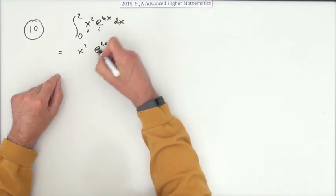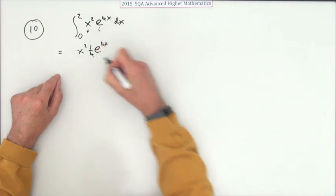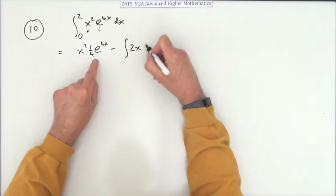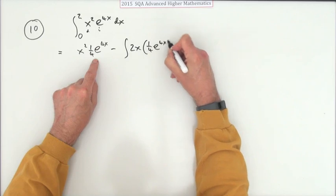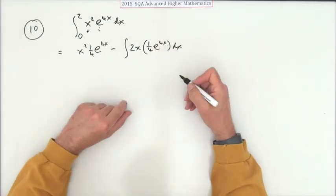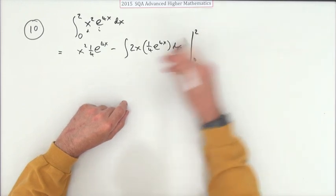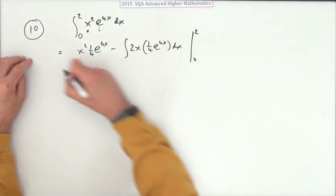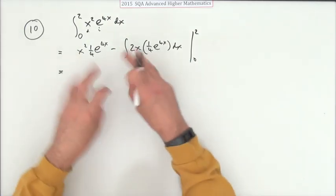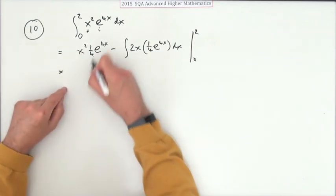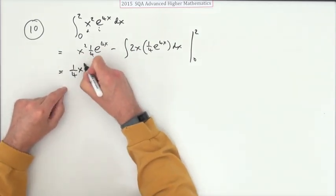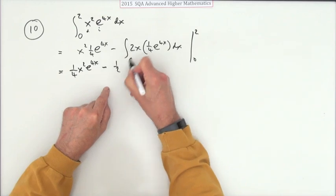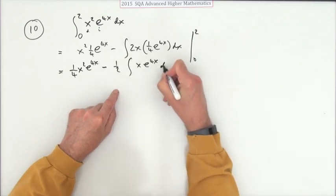Integrating first: e^(4x) integrates to a quarter e^(4x), so that one waits while x² differentiates to 2x. So we get a quarter x² e^(4x) minus the integral — notice I'm not putting any limits in here. I'll differentiate 2x and carry that one forward. That tidies up to a quarter x² e^(4x) minus a half of the integral of x e^(4x) dx.